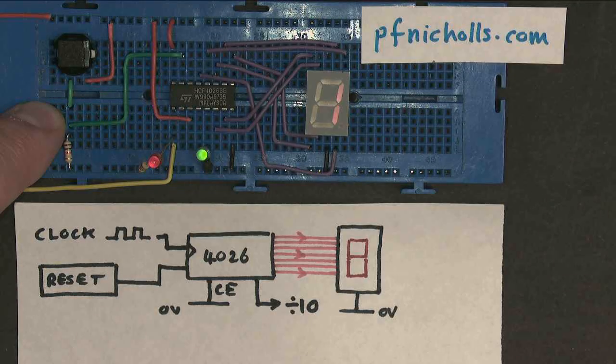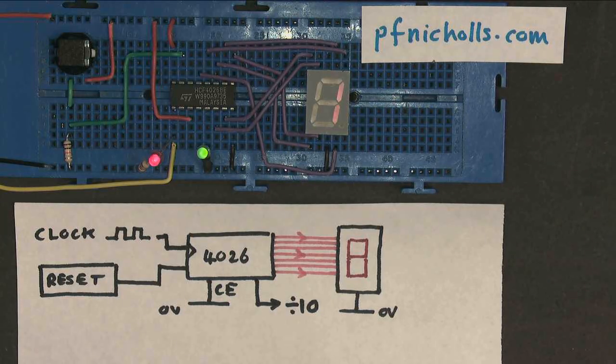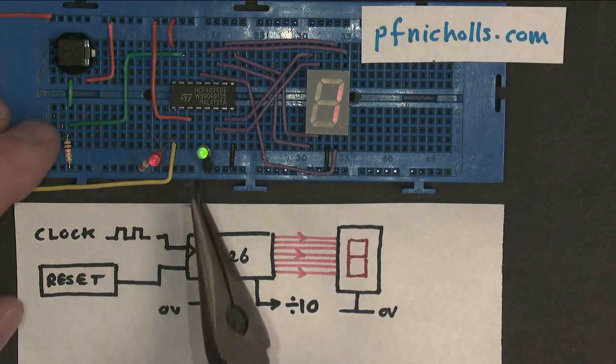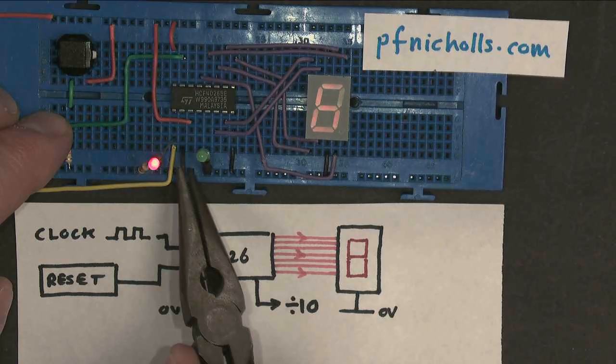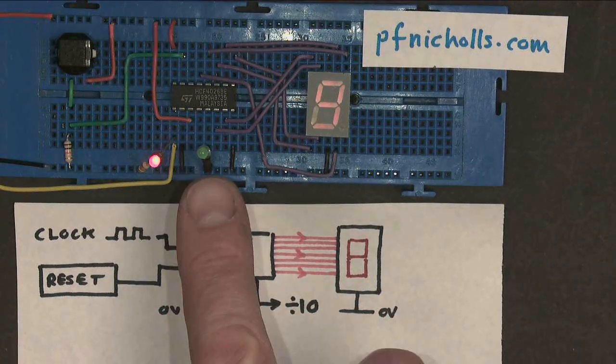If I take this wire back out again, again, not a lot seems to happen, because being a CMOS circuit, it just holds the value it just had. If I plug it back into 0, then the output starts changing, and the divide by 10 output works again.